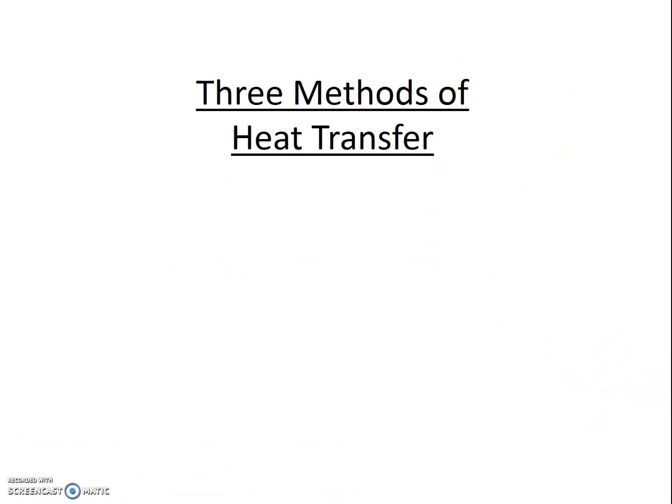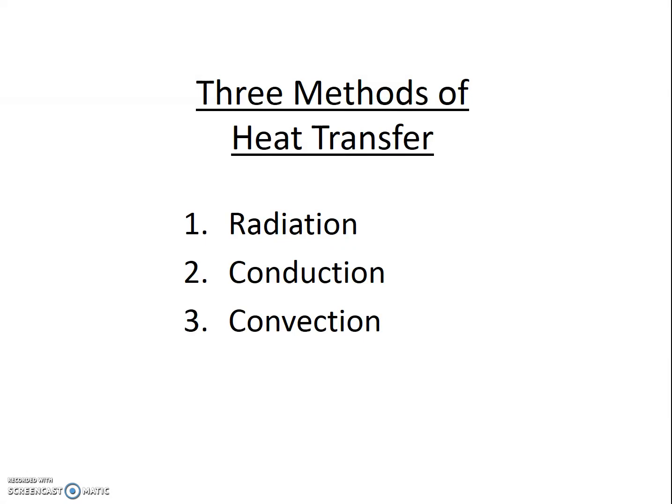So most of what we've discussed thus far deals with radiation, but radiation is just one form of heat transfer. There are three methods of heat transfer. You should memorize them and be able to define them, and you'll need to be able to use these terms correctly when describing heat transfer in a home, in the atmosphere, in a car, in a solar cooker, etc. The three methods are radiation, conduction, and convection.